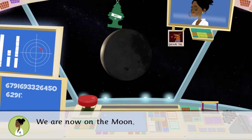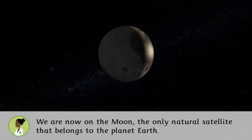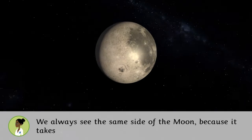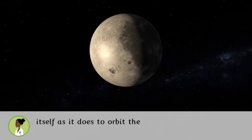We are now on the Moon, the only natural satellite that belongs to the planet Earth. We always see the same side of the Moon because it takes the same amount of time to rotate around itself as it does to orbit the Earth.